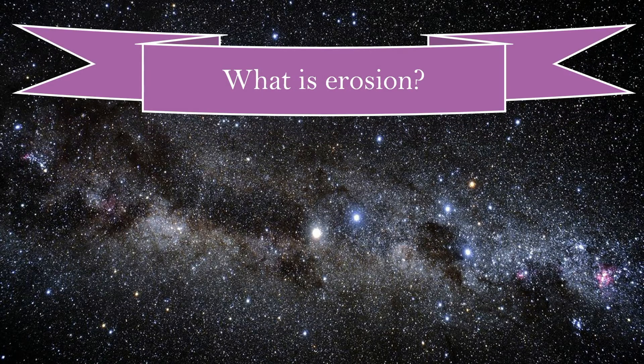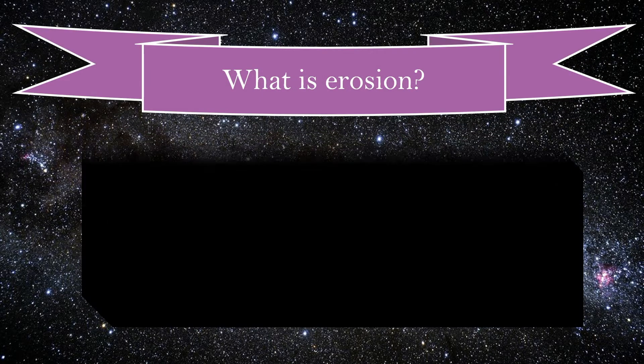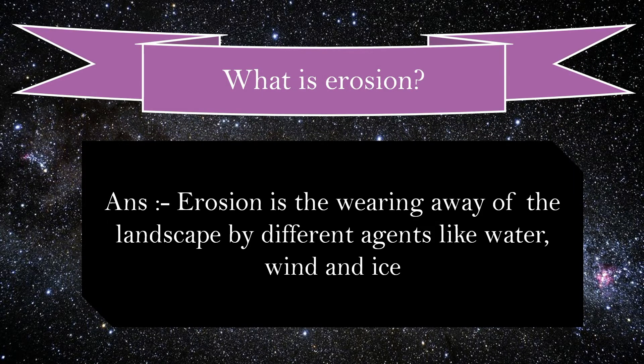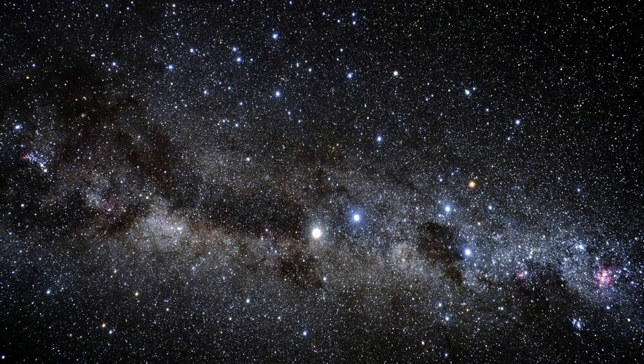What is erosion? Erosion is the wearing away of the landscape by different agents like water, wind, and ice.